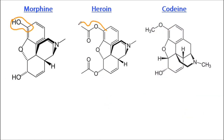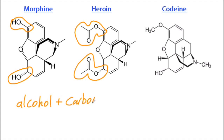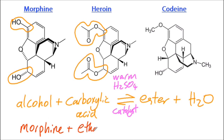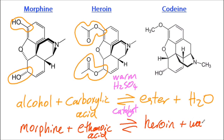Let's see how we can turn the alcohol in morphine to the ester in heroin. If you remember your esterification reaction: an alcohol and carboxylic acid makes an ester plus water. You need to warm it with sulfuric acid, which acts as a catalyst. So the alcohol is morphine, the carboxylic acid would be ethanoic acid, the ester is heroin, and water is water.